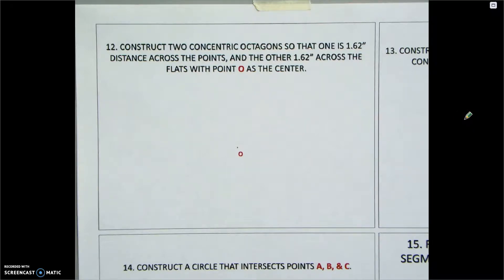This geometric construction problem is about octagons. We're asked to create two concentric octagons so that one is 1 and 5 eighths across the points and the other is 1 and 5 eighths across the flats, both of which having point O as the center.